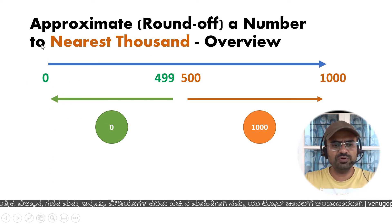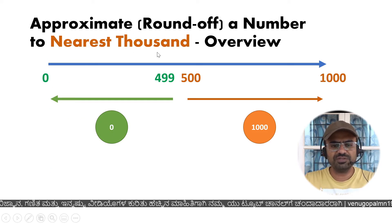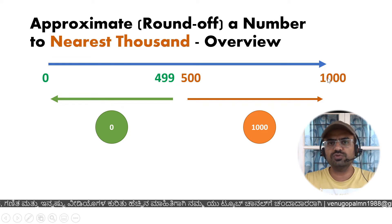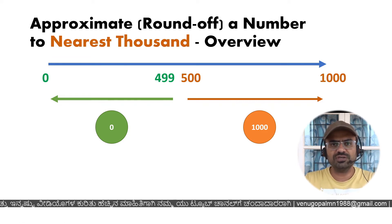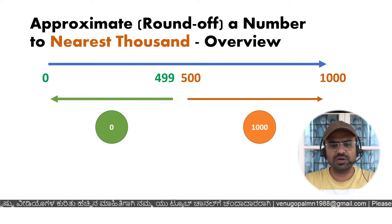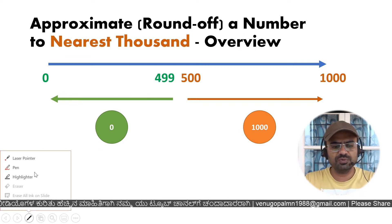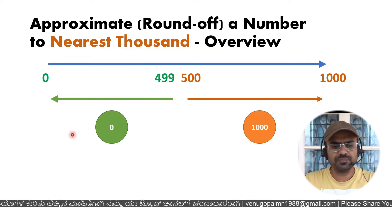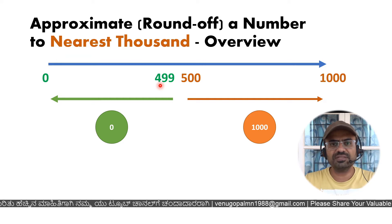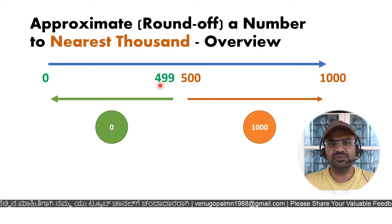If you look at approximating or rounding a given number, it falls in a range near 1000. If you look at the numbers 0 to 499, that is about 500 digits — 0, 1, 2, 3, all the way till 499.